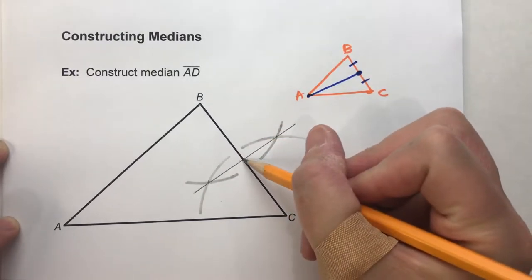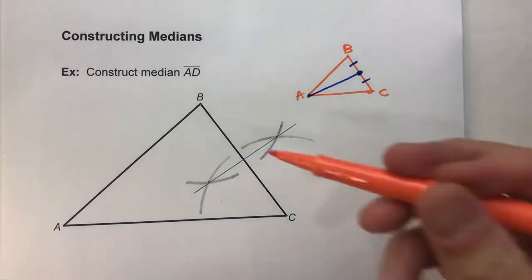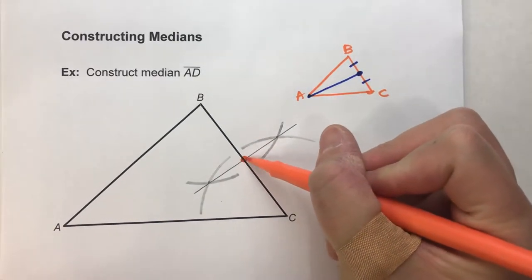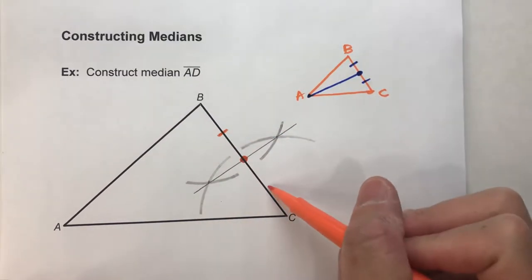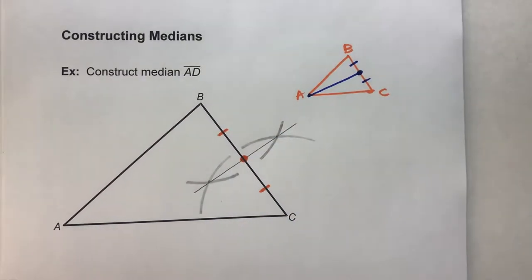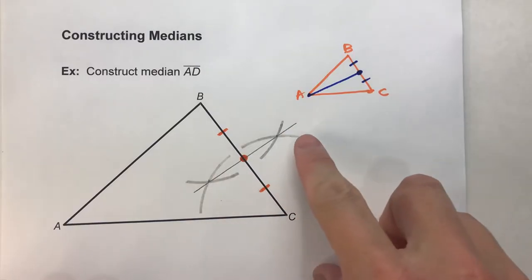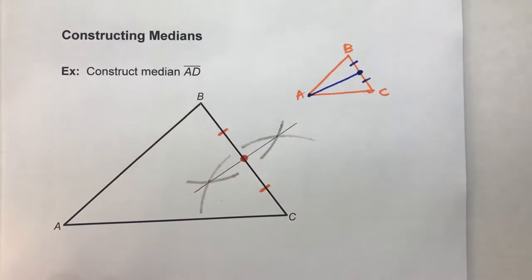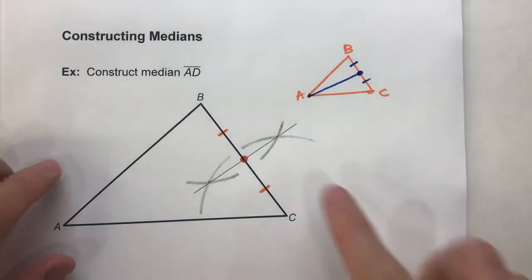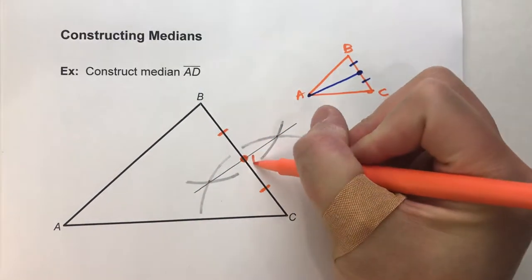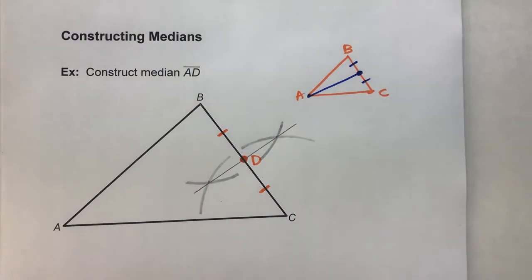which means this point right here, I'll do it in orange so it's easy to see. That is the midpoint of my segment. And I know that because the perpendicular bisector of a segment is going to go through the midpoint. So, I now found that midpoint and it looks like it wants us to label it D, so I'll do that. I'll label it D.